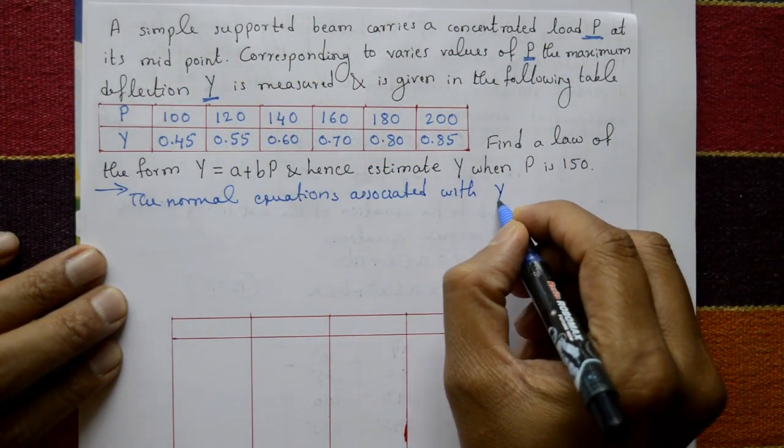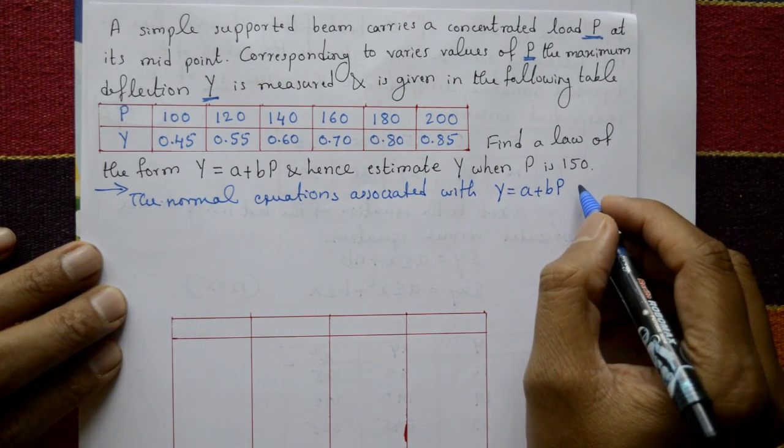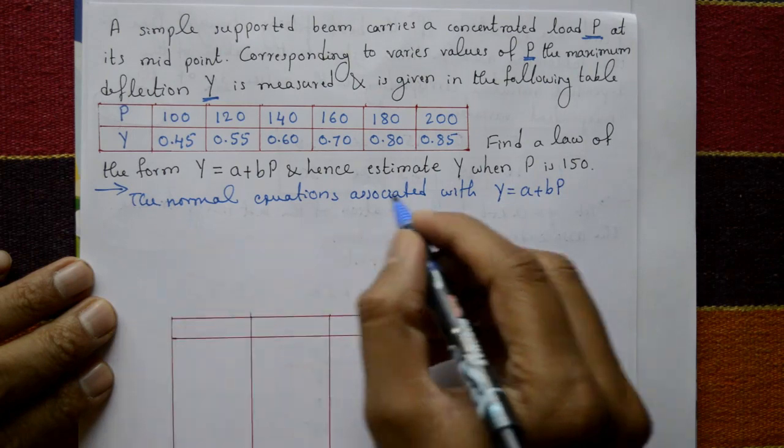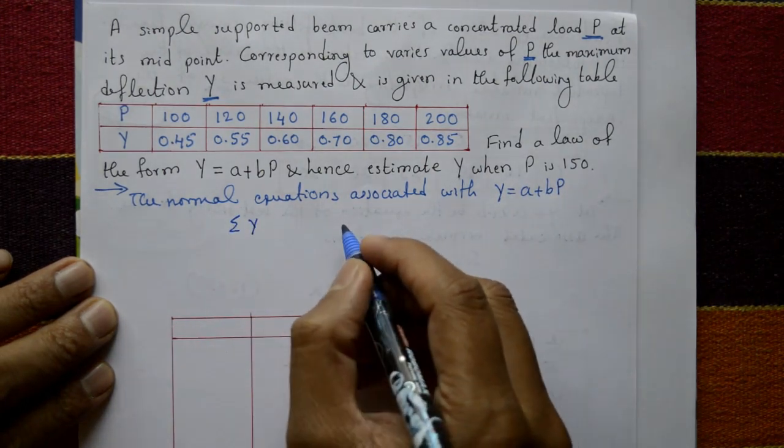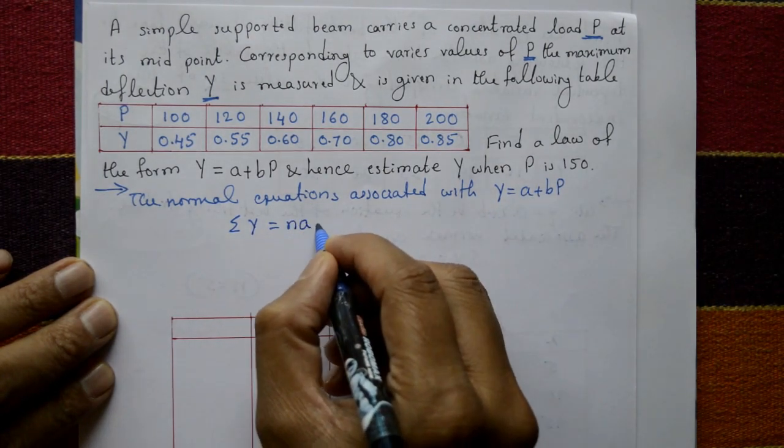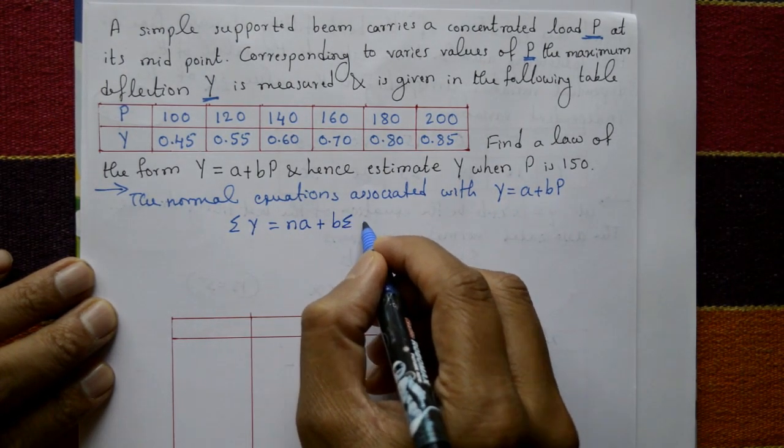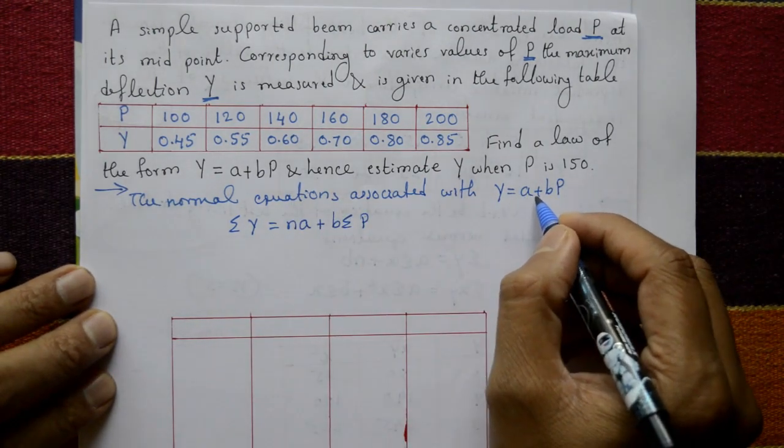Y is equal to A plus BP. Now taking summation on both sides: summation Y is equal to NA plus B summation P.